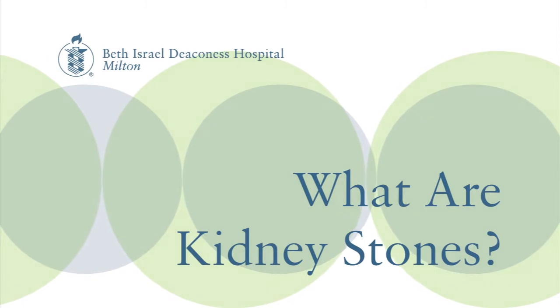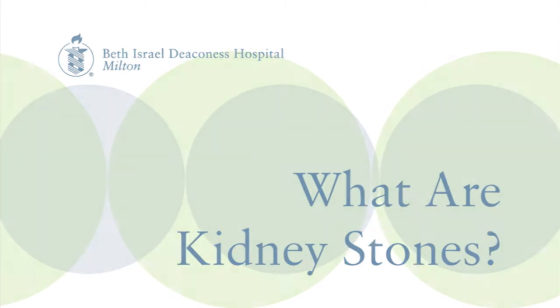Kidney stones are basically just crystals that form in the urine. They're usually composed of a couple of components, most commonly calcium and also oxalate. Kidney stones precipitate out of the urine when they become supersaturated, and essentially they're small crystals that then form into the aggregate of a stone — that's commonly what's called a kidney stone.